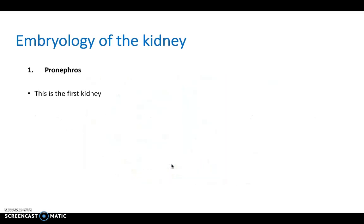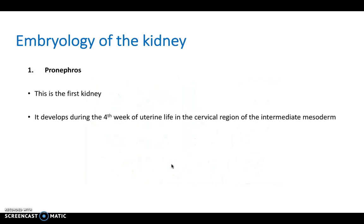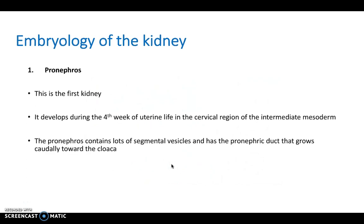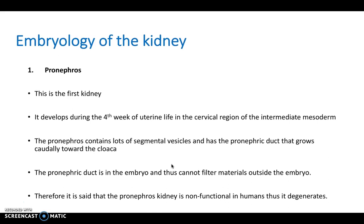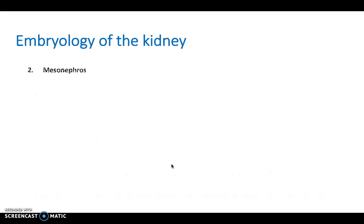The first stage is pronephros, which develops during the fourth week of uterine life in the cervical region of the intermediate mesoderm. The pronephros contains segmental vesicles and has a pronephric duct that grows caudally towards the cloaca. In terms of kidney development, it's important to be aware of the three stages, what occurs in each, how they regress as the next stage takes over, and how things can go wrong to cause clinical conditions.